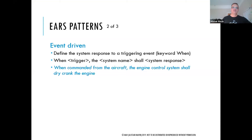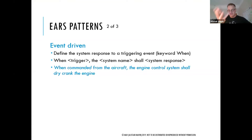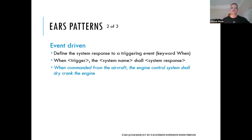Event-driven requirements define what the system must do in response to a triggering event. The keyword is 'when': when some trigger occurs, the system name shall system response. For example: 'When commanded from the aircraft, the engine control system shall dry crank the engine.' One important feature of EARS is that the system name should be explicit and specific — not just 'the system shall' — because requirements are often copy-pasted into different documents or reused across programs, so it must always be clear which system is required to exhibit that behavior.